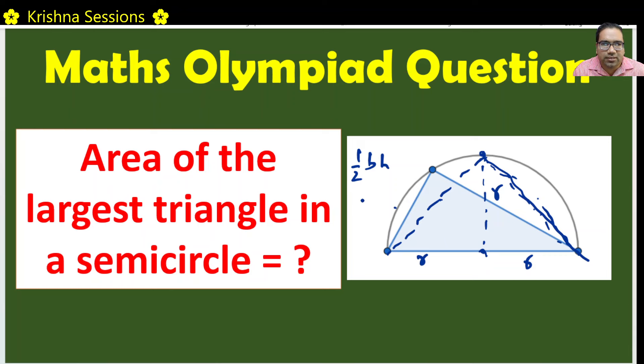Half into base. What is base? Base is 2R. And what is height? Height is again R because this is again the radius. So, half into 2R into R - half into 2R squared by 2. So, R squared is the correct answer.